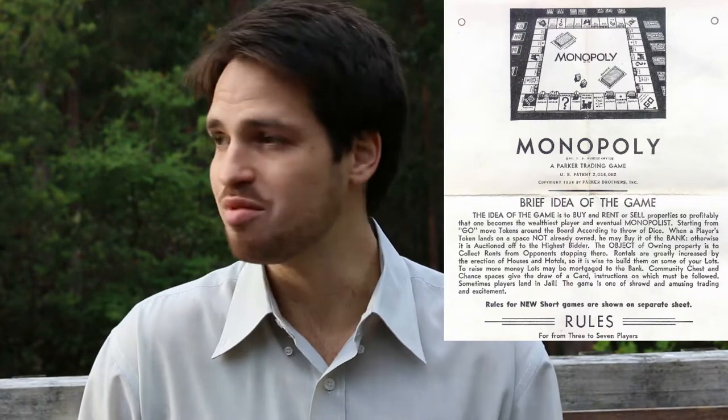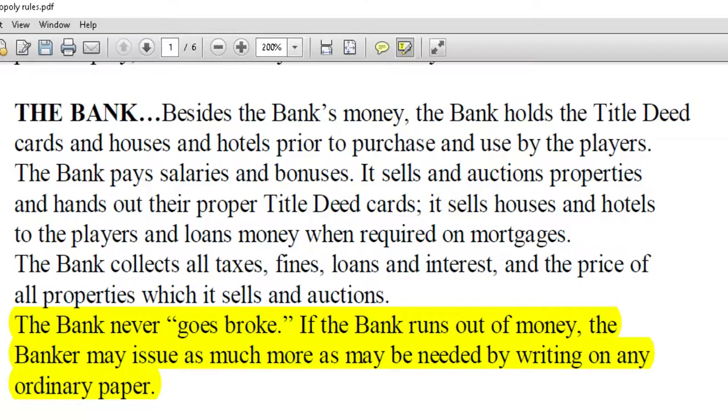A good way of looking at this is to look at the board game Monopoly. I just happen to have the rules of Monopoly in front of me, and sure enough, the first thing that you do when you sit down to play the game of Monopoly is you select a banker. It says in the rules of Monopoly: the bank collects all taxes, fines, loans, and interest. The bank never goes broke. If the bank runs out of money, the banker may issue as much more as needed by writing on any ordinary paper.